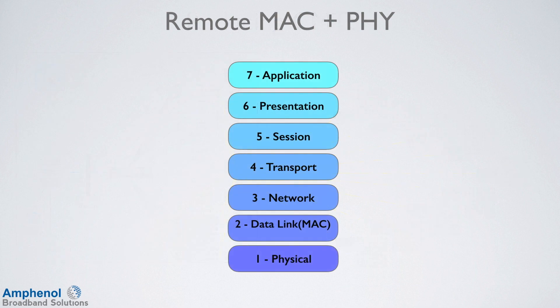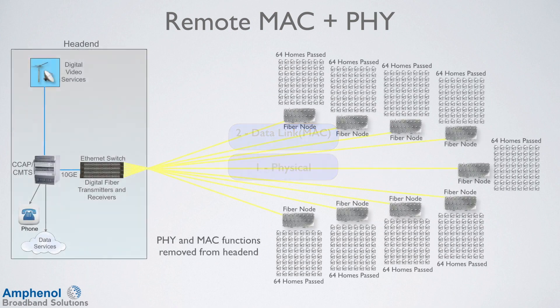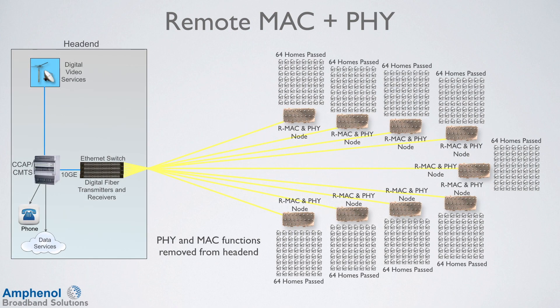Another one of the distributed access architectures is Remote MAC and PHY. With this approach, the MAC and physical layers are moved to the field, where the remote MAC and PHY nodes are installed just like remote PHY nodes. In the head-end, the CMTS is now just a router.